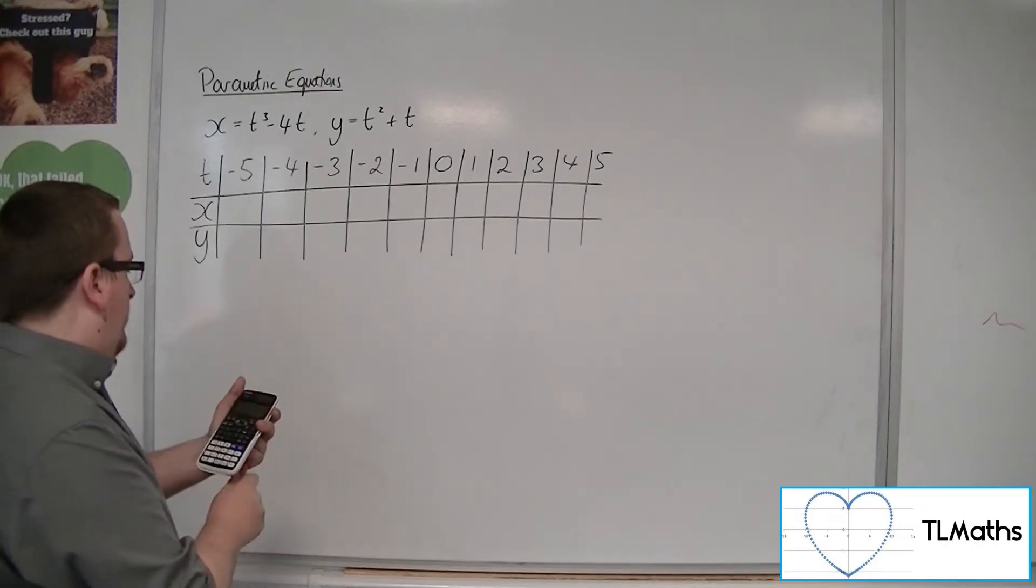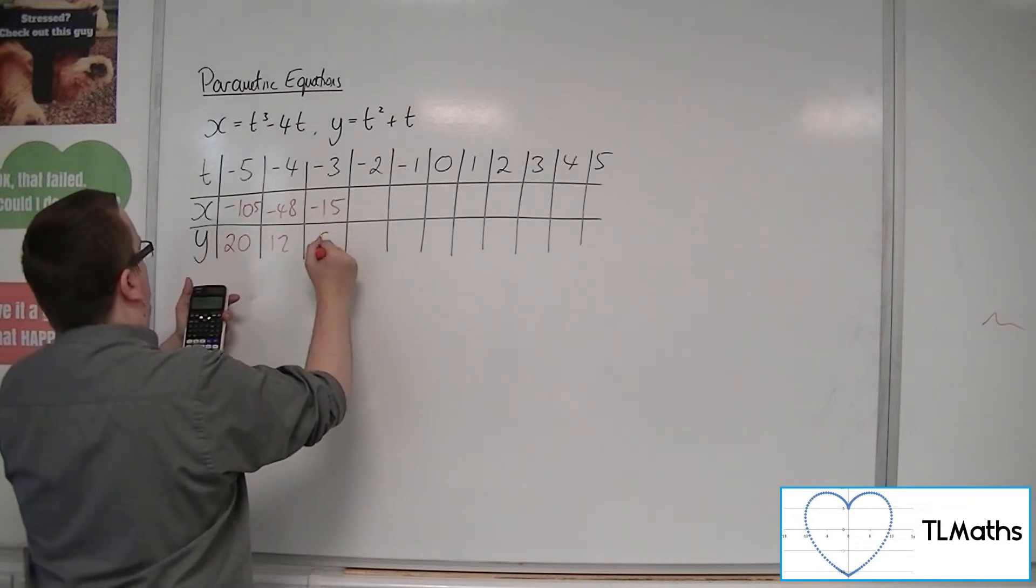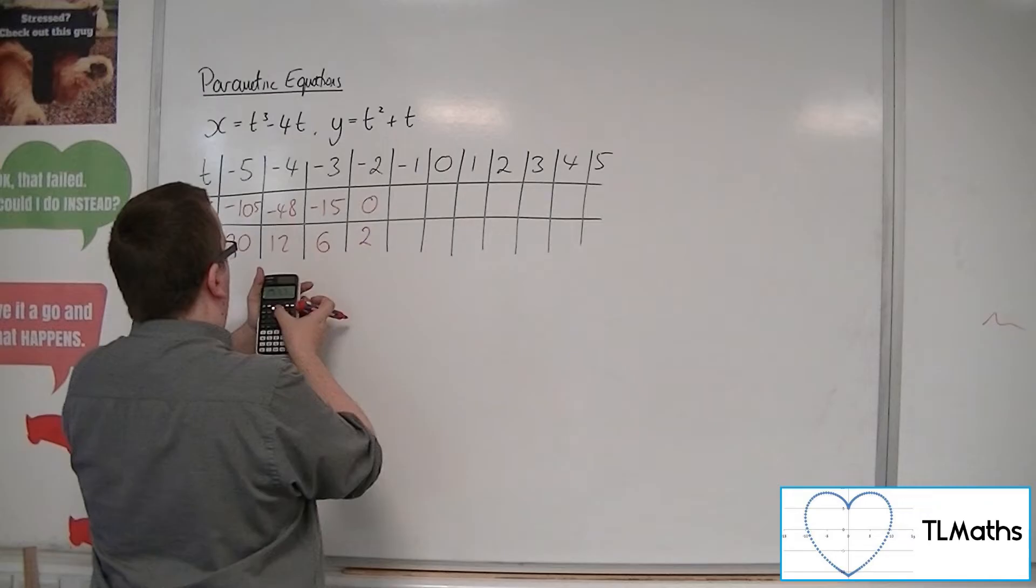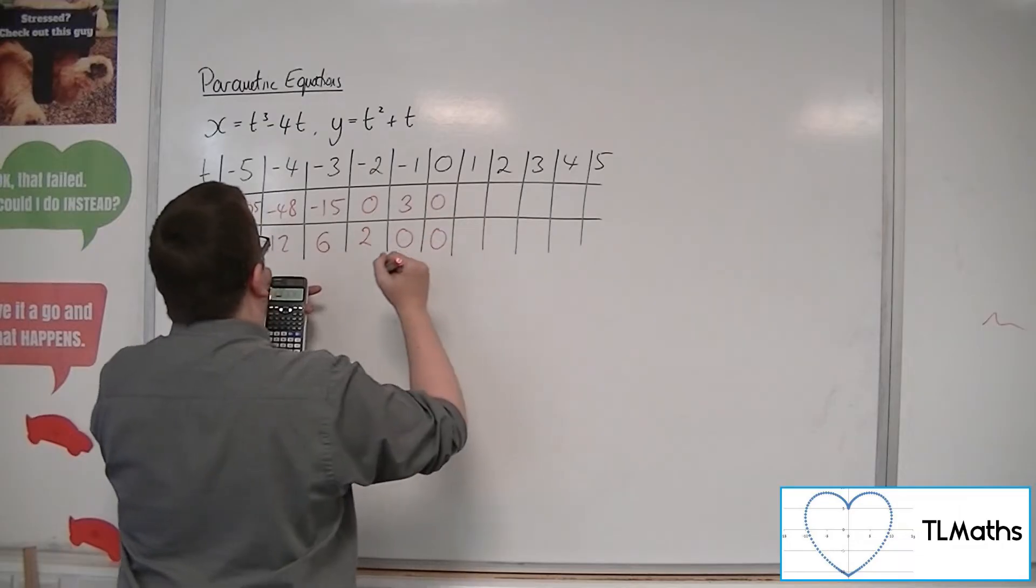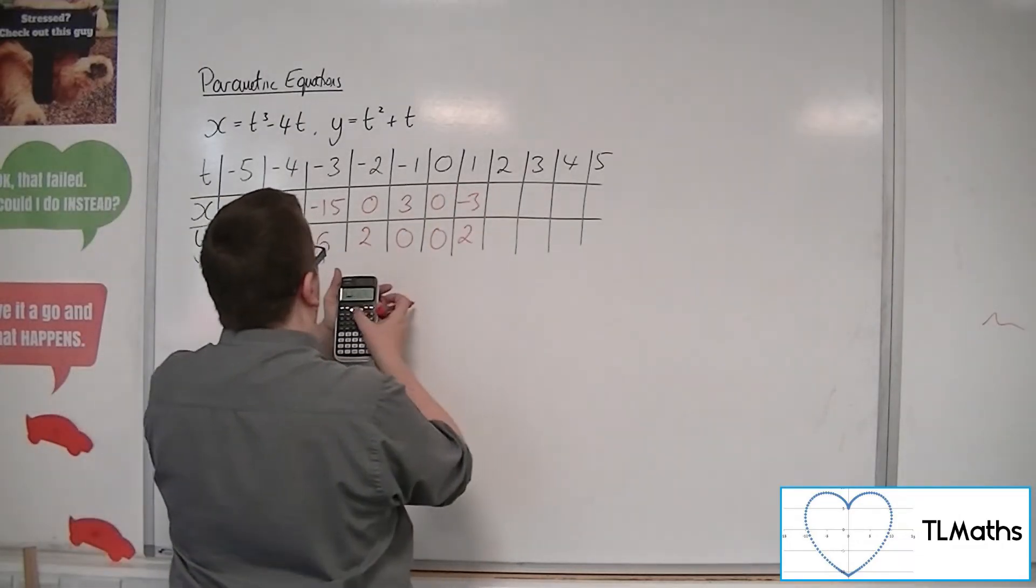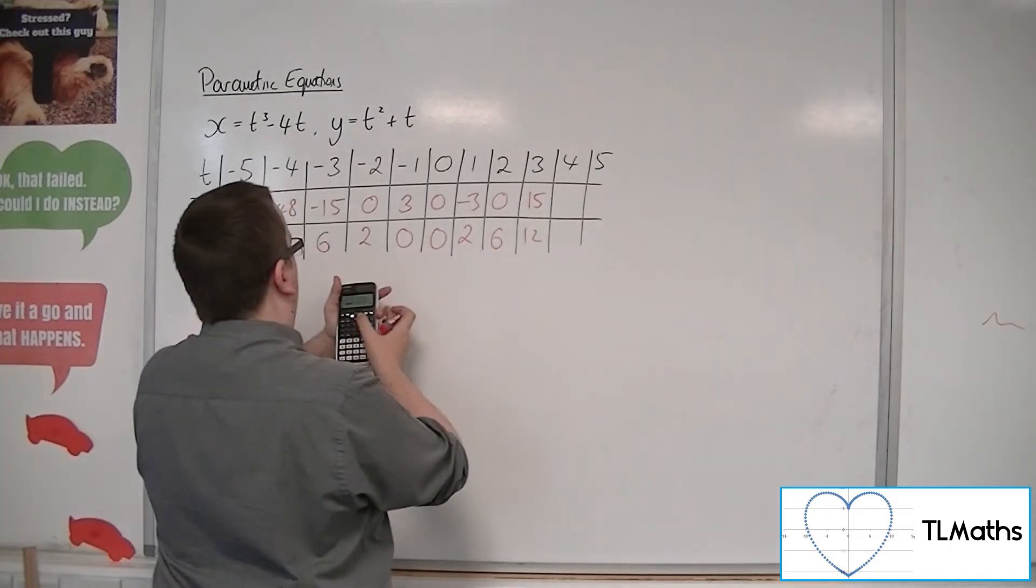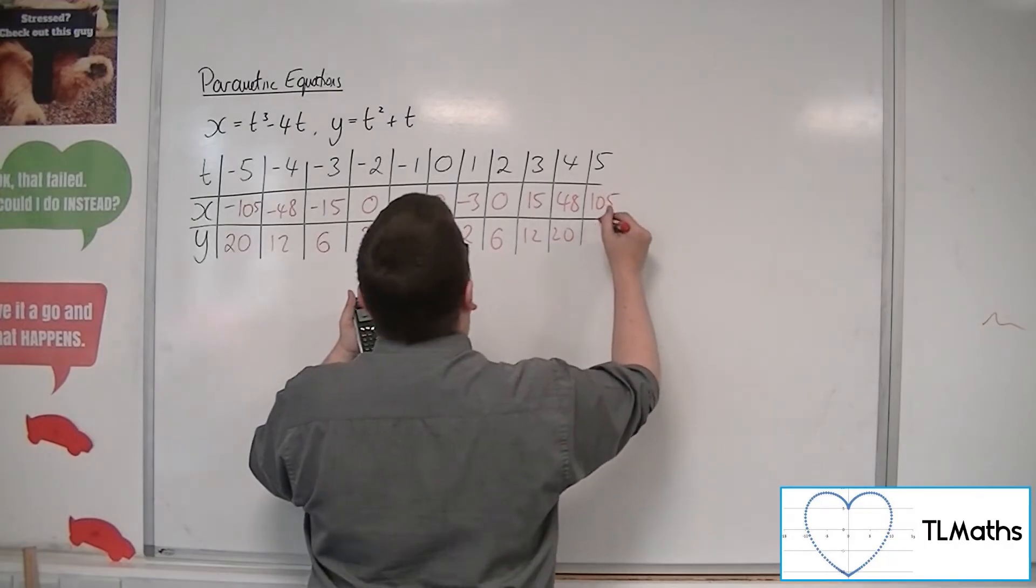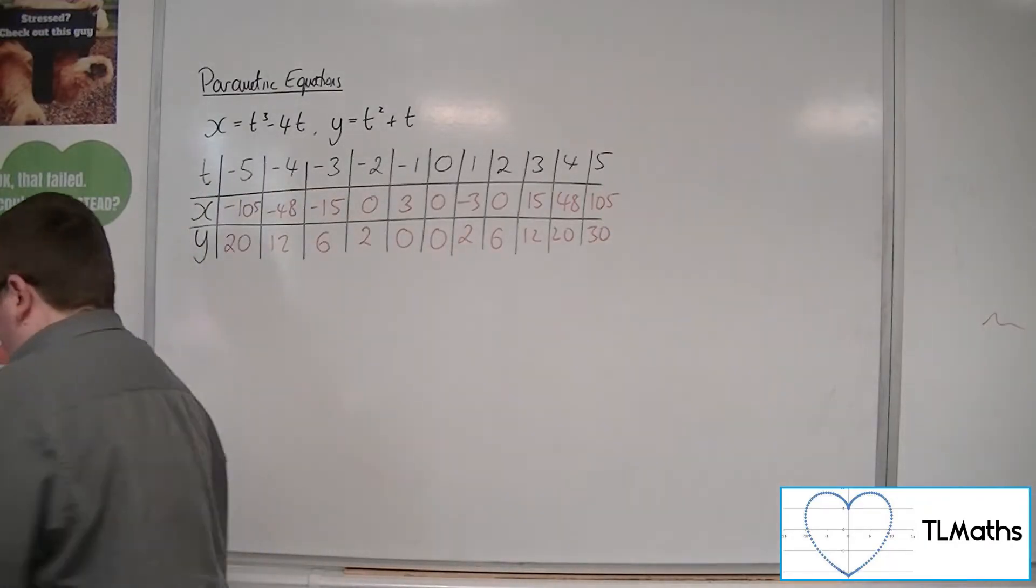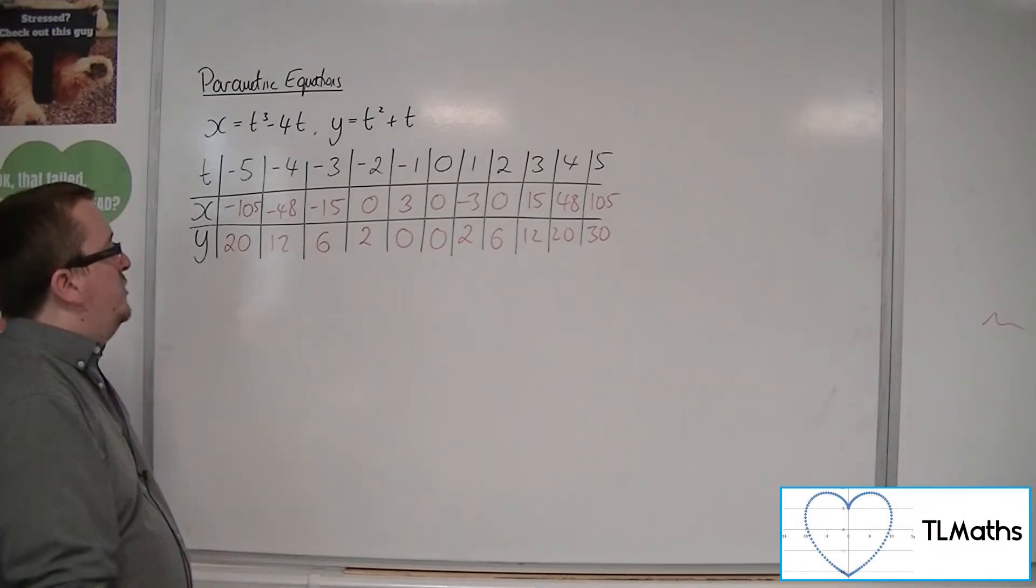So we've got values for x and y: starting with (-105, 20), (-48, 12), (-15, 6), (0, 2), (3, 0), (0, 0), (-3, 2), (0, 6), (15, 12), (48, 20), and (105, 30). That's using the table function, and you can generate those values otherwise by just typing them into your calculator.